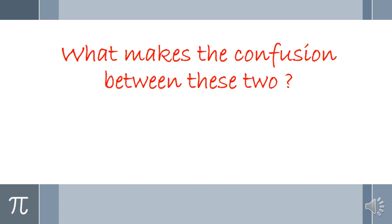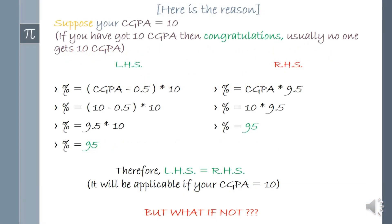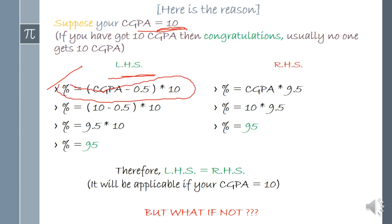Let me prove the difference. Suppose your CGPA is 10. On the left hand side I have written the correct formula, and on the right hand side I have written the formula I stated as wrong. BPUT suggests using the left hand side formula. You put 10 in place of your CGPA and calculate, and you can see clearly that on both sides you are getting the result 95.